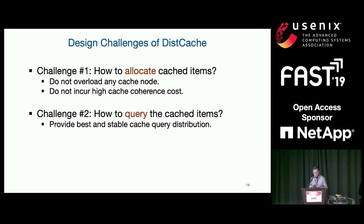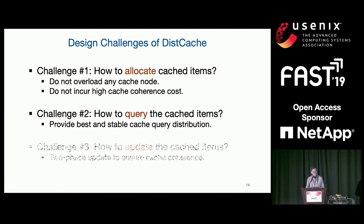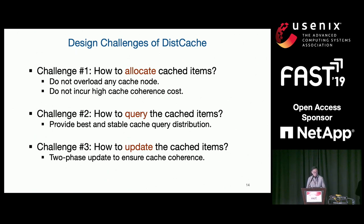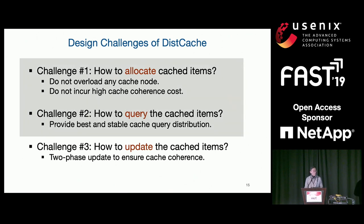We have the following design challenges. First, how do you allocate hottest items to the cache without overloading any cache node or incurring high cache coherence cost? Second, after allocating cached items, how do you query them — with two layers and two copies, how do you provide the best stable query distribution? Third, how do you update cached items? For challenge three, we use a two-phase classical update to ensure cache coherence. Today, I'll focus on challenges one and two.